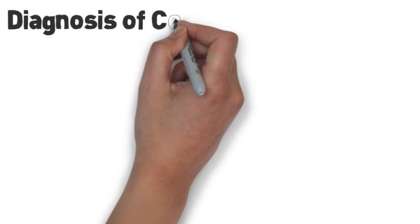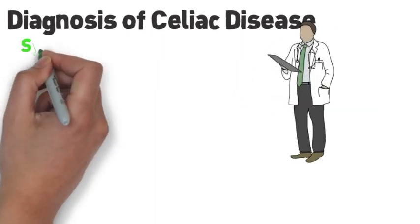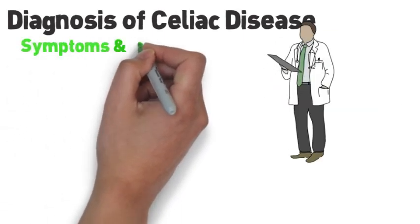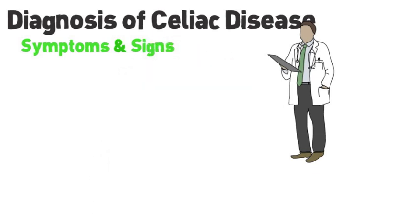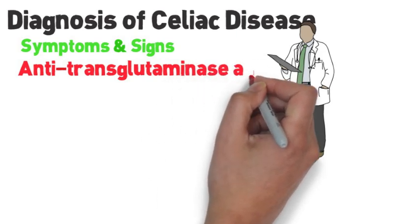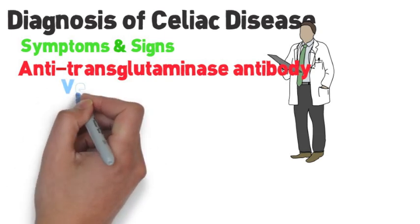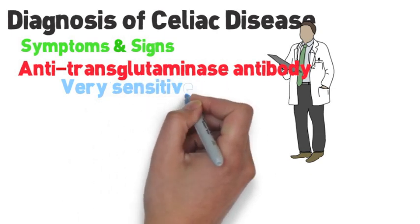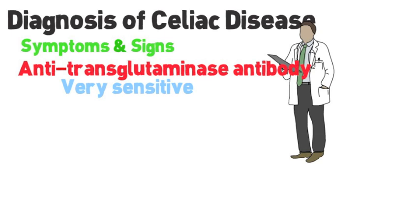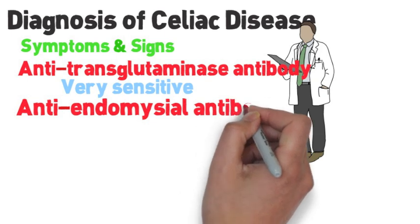How do you diagnose celiac disease? Celiac disease is diagnosed first by evaluating your symptoms to see what could be causing them. Your doctor should take a thorough history and do a thorough physical exam to assess whether you have celiac disease. In addition, we can get antibody studies — an antitransglutaminase antibody as well as an endomysial antibody. The antitransglutaminase antibody is very sensitive, meaning if it's negative it's unlikely you have celiac disease, and very specific, meaning if it's positive it's very likely you have celiac disease.